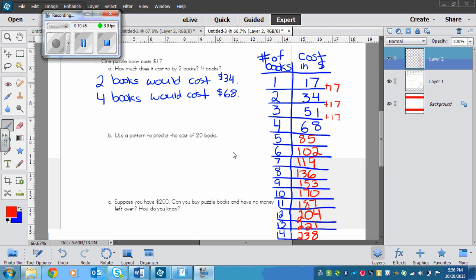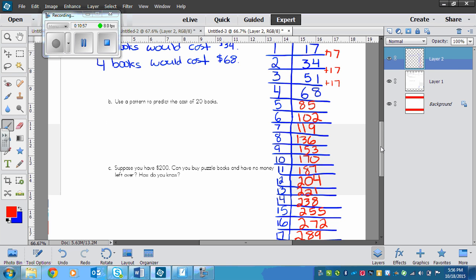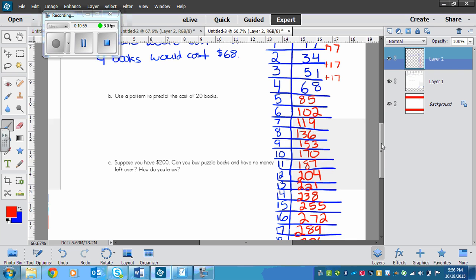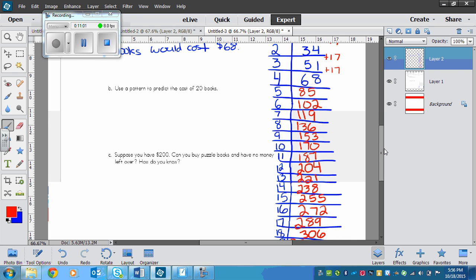So I've calculated the cost. I've added $17 each time, and that's okay if you use a calculator in this case. That's a lot of adding $17, but you didn't have to. It's possible to solve without a calculator. So I used the pattern to predict the cost of 20 books.